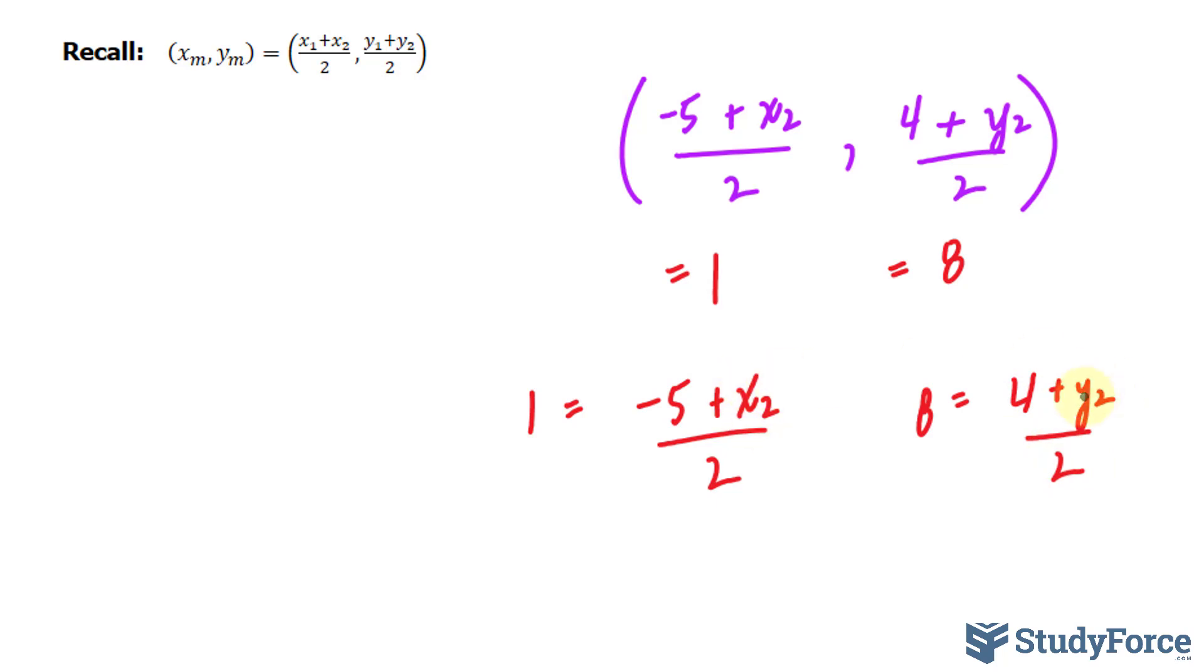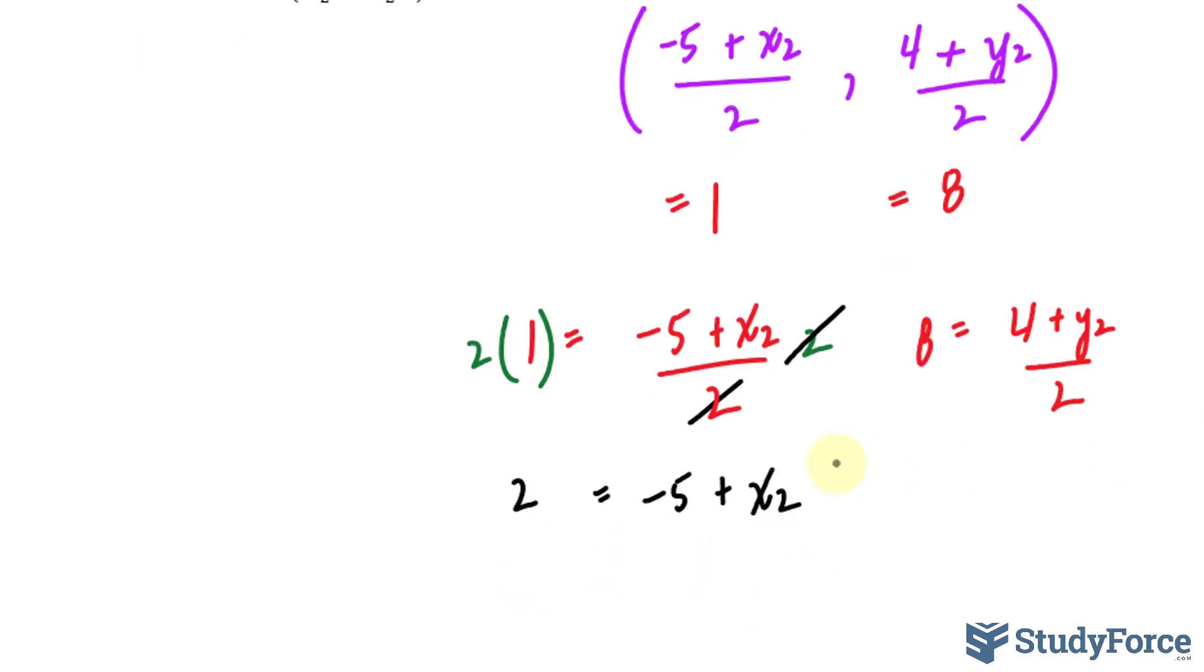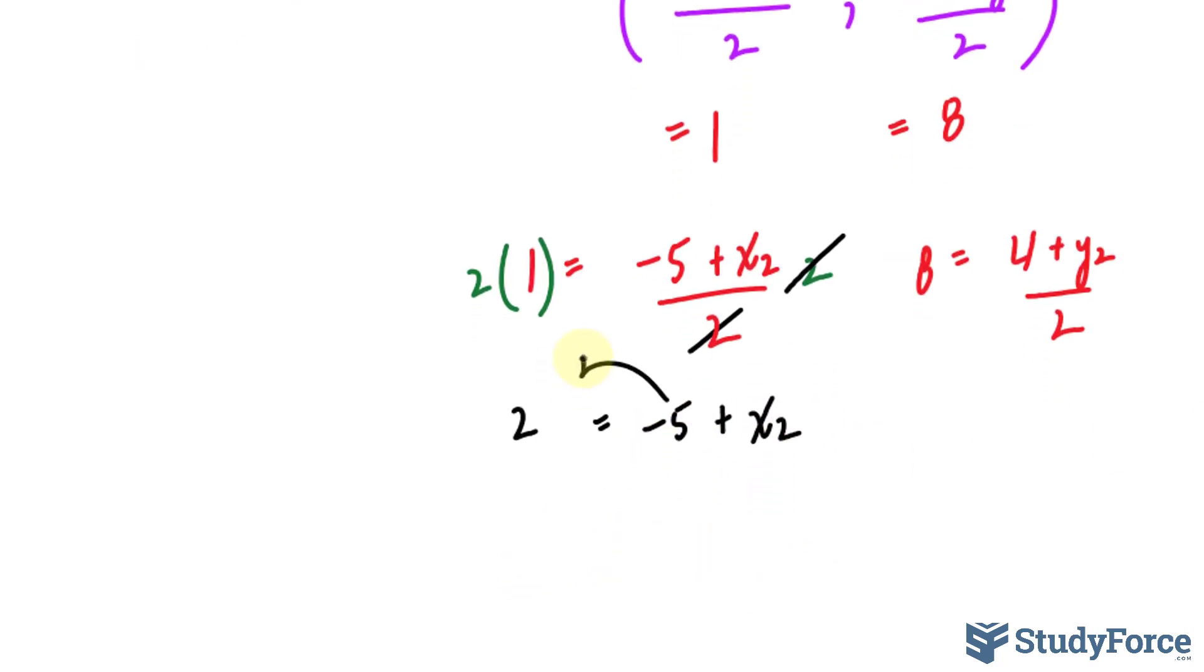Let's solve for these two unknowns. I'll start over here. I'll multiply both sides of the equation by 2, and what this will do is cancel out the 2 on the right side, leaving me with 2 is equal to negative 5 plus x sub 2. Solving for the unknown, I bring this over, I get 2 plus 5 is equal to x sub 2. Notice the symbol changed to positive 5, and so we get 7.